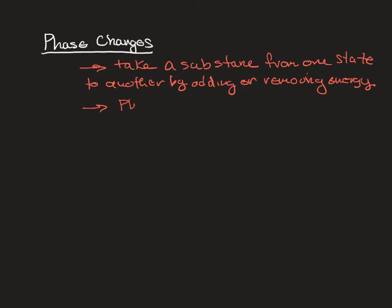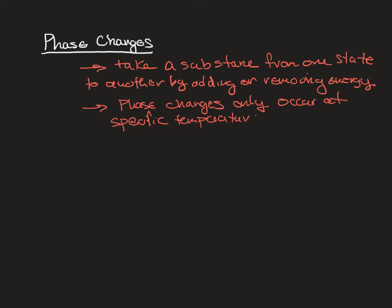We do have to be careful here. Phase changes only occur at specific temperatures. So if you take an ice cube from the freezer, it's frozen because the temperature inside the freezer is below the melting point. You take it out and it doesn't instantaneously turn into a puddle of water, because first the ice cube has to heat up to its melting point, and then energy can go into actually melting the ice cube. We're going to learn how to calculate how much energy is needed to first raise the temperature up to the melting point, and then how much energy is actually required to melt the entire ice cube.